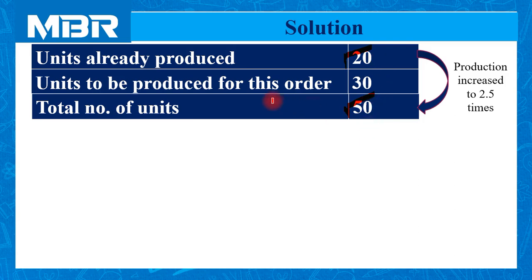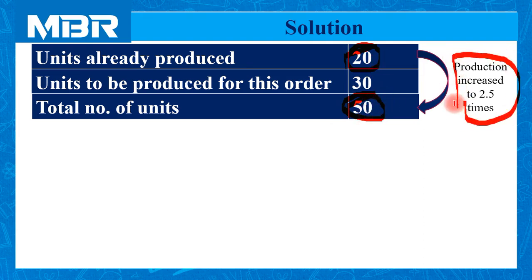The examiner has provided information in such a way that we can solve the problem easily, but we need to establish certain relationships. The original number of units produced is 20. If we accept the order of 30 units, then total units become 20 plus 30 equals 50. And 50 is 2.5 times the original production of 20 units.